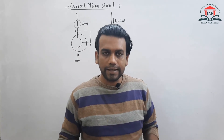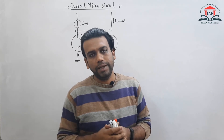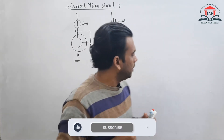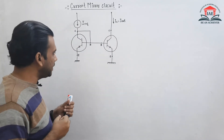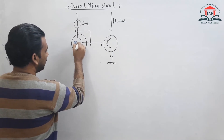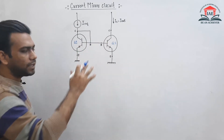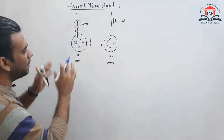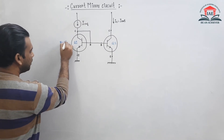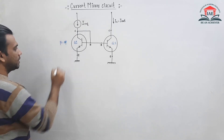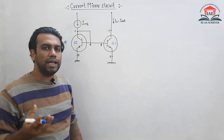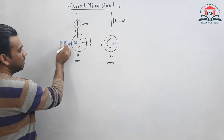Hello students, welcome to IE. In this session we are going to discuss what will happen if the beta of the transistors is not infinite for a current mirror circuit. Previously we discussed the basic requirements of a current mirror circuit, and we assumed that beta was infinite.